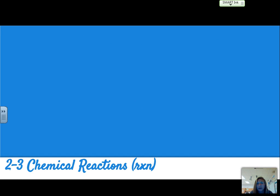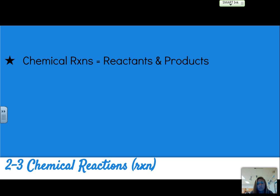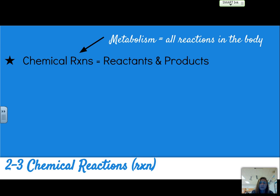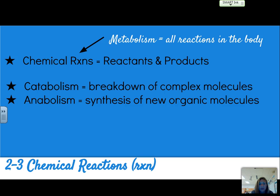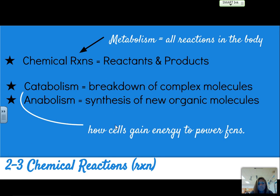Section 2.3 talks about chemical reactions. Chemical reactions are made up of reactants and products. Any reaction in the body is what we call metabolism. We can break these down into two types: catabolism is a breakdown of complex molecules, and anabolism is the synthesis of new organic molecules — synthesis just means to create. Catabolism is how cells gain energy to power function, which is a very important part of bodily processes.